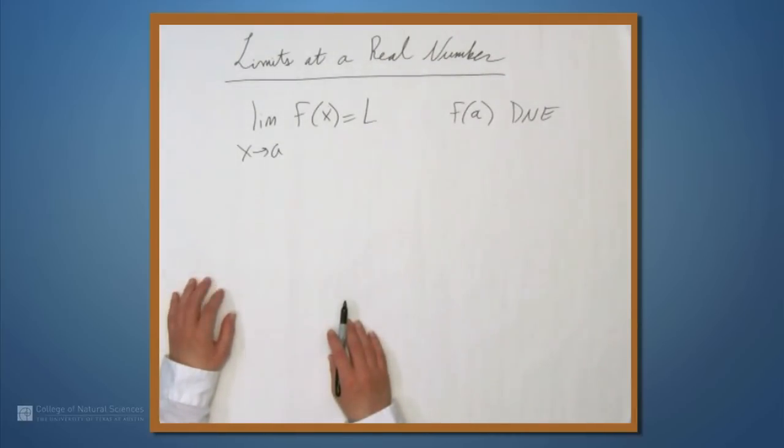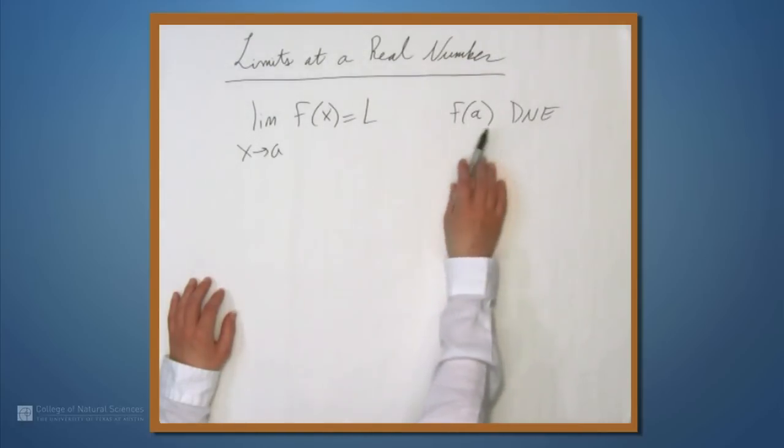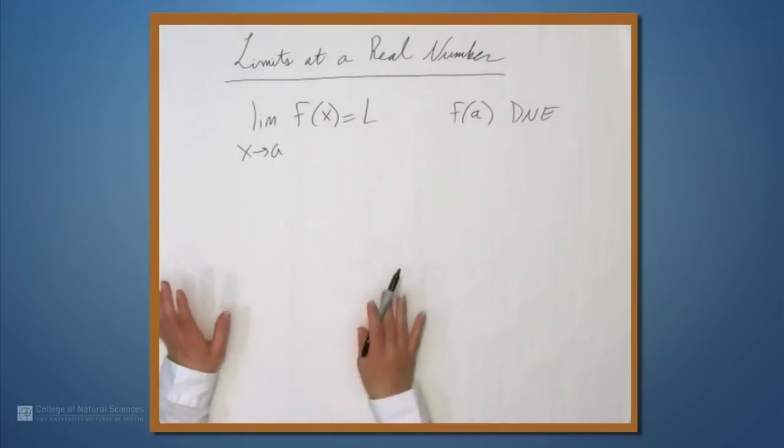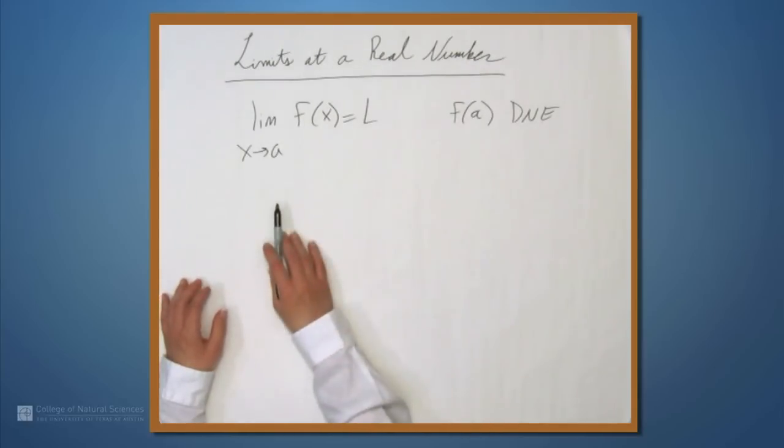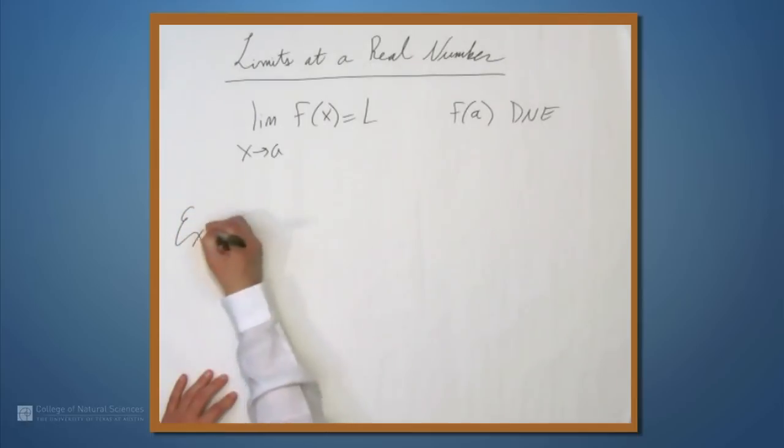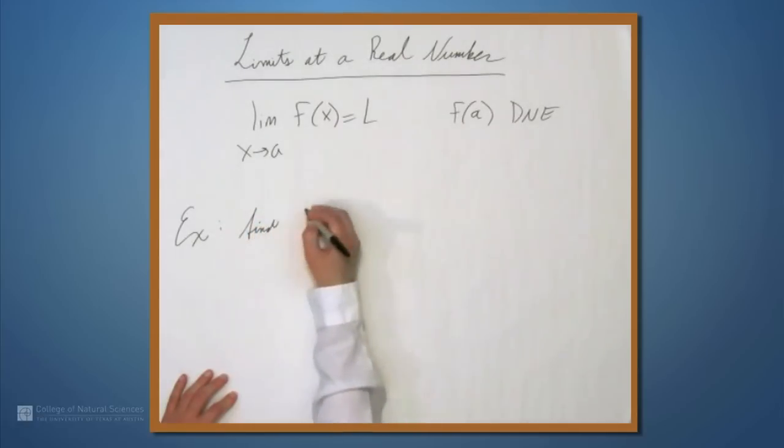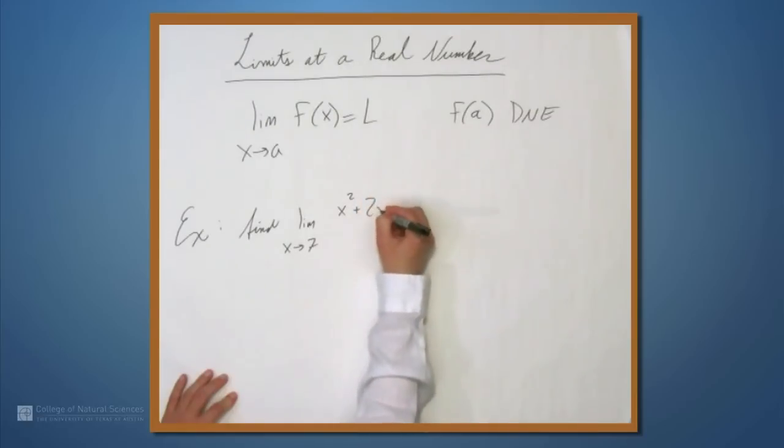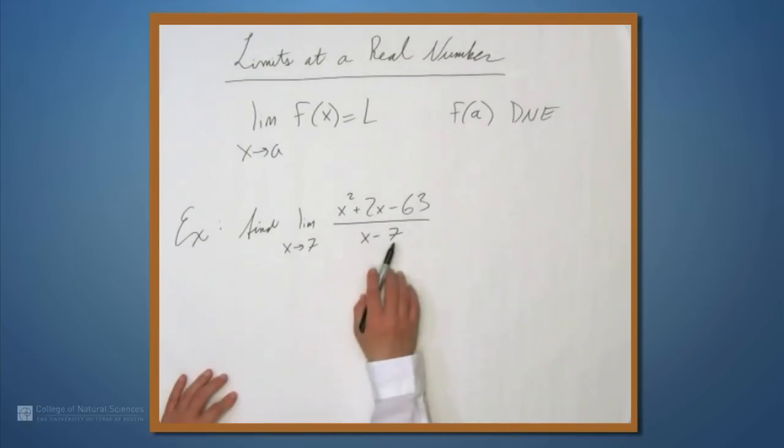So probably the most common type of problem that you'll see is a problem like this, where f doesn't exist, and so you can't even be tempted simply to plug a in to f. So let's look at an example. Let's find the limit as x approaches 7 of x² plus 2x minus 63 all over x minus 7. So it's immediately obvious that we can't plug 7 in because we have an x minus 7 in the denominator. So what we're going to do is rewrite this so that we don't have an x minus 7 problem.